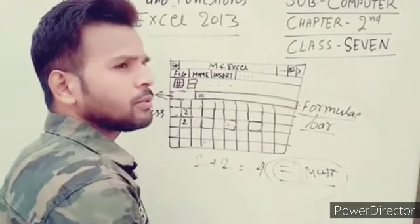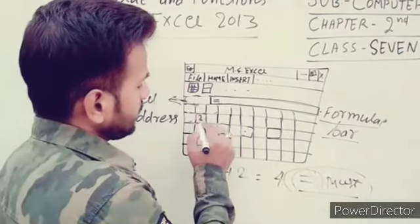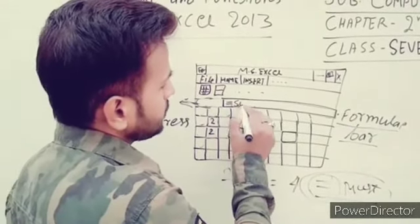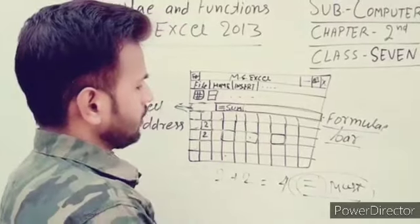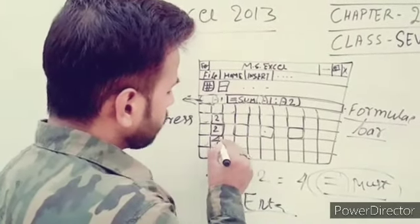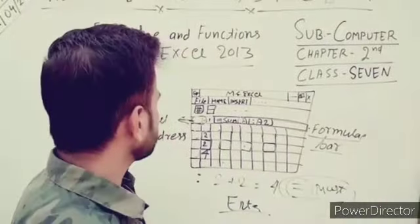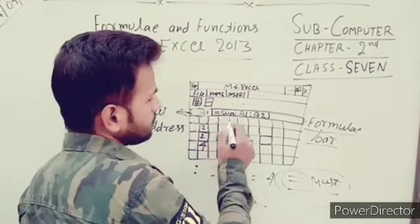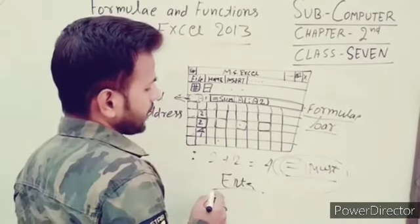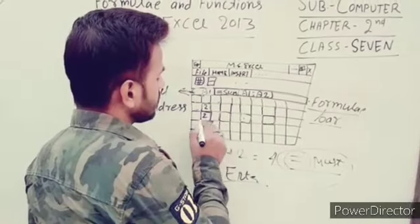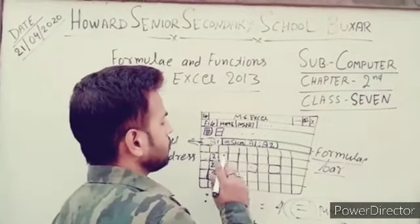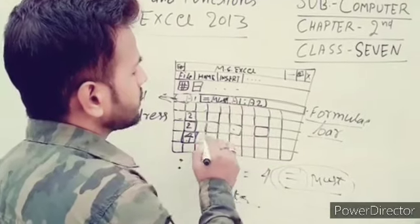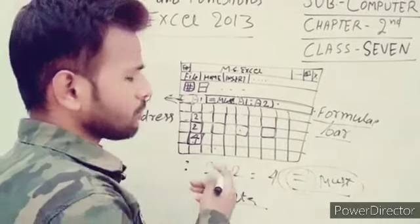We can write equal sign, then SUM, then bracket, and suppose we press enter key. If we are going to count, we write SUM bracket A1 semicolon A2 and press enter key. Two plus two is four - our result is shown here. If we are going to multiply, we can write MULT - our multiply function is also there.